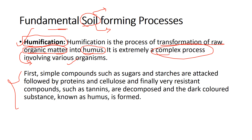In humification, simple compounds like sugars and starches are attacked first, followed by proteins and cellulose — these are components of plant cell walls and structures. Finally, very resistant compounds such as tannins are decomposed, and dark-colored substances known as humus are formed. Tannins are pigments present in the bark of plants. Their decomposition ultimately results in the formation of humus.